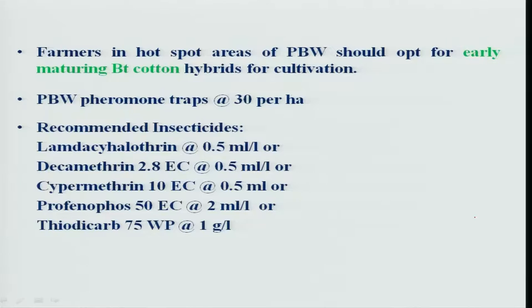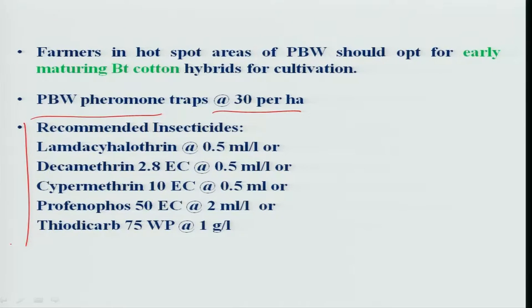Early maturing varieties can be adopted wherever pink bollworm is a severe problem. Pheromone traps at 30 per hectare can be used to mass trap adults of pink bollworm. Recommended insecticides for pink bollworm include pyrethroids, but these should not be sprayed repeatedly as they can trigger outbreaks of whitefly and aphids. In between, other insecticides like profenofos, thiodicarb, and acephate can be used to manage pink bollworm effectively.